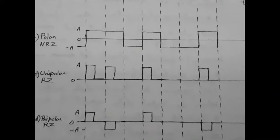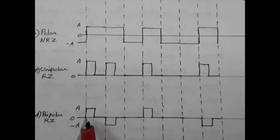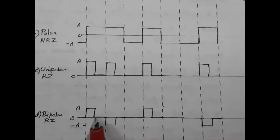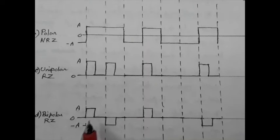The bipolar RZ format is also called alternate mark inversion or AMI. Here, logic one is represented by plus or minus A volts for the first half bit period and zero volts for the later half. Logic zero is represented by zero volts. The alternation means successive logic ones alternate in polarity between +A and -A.